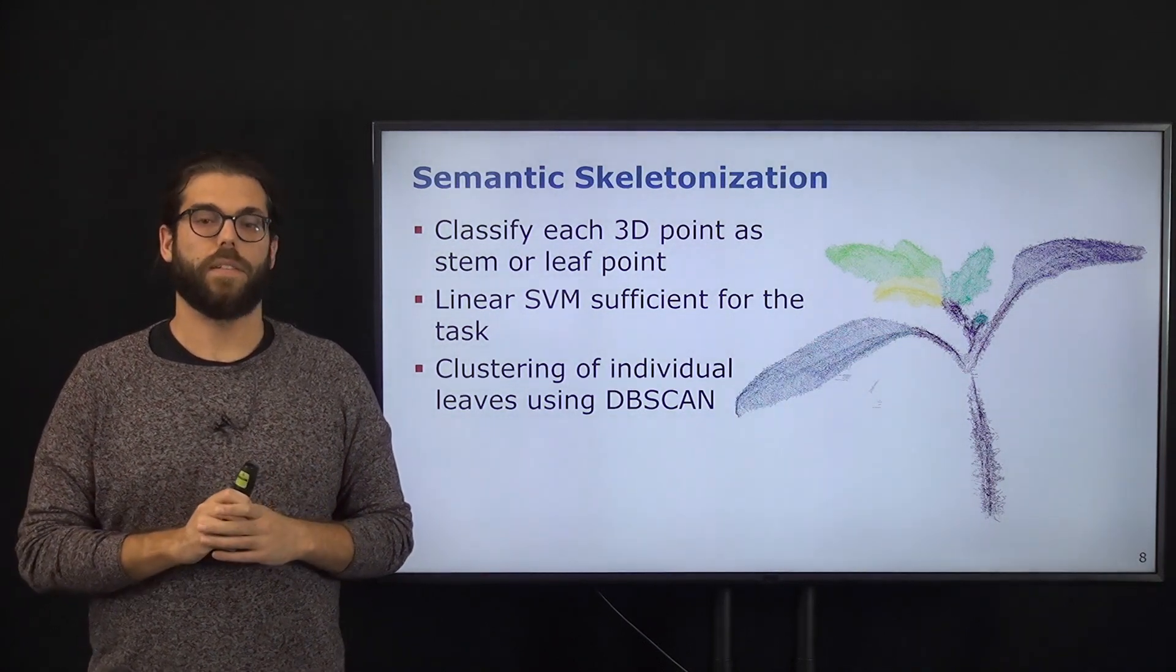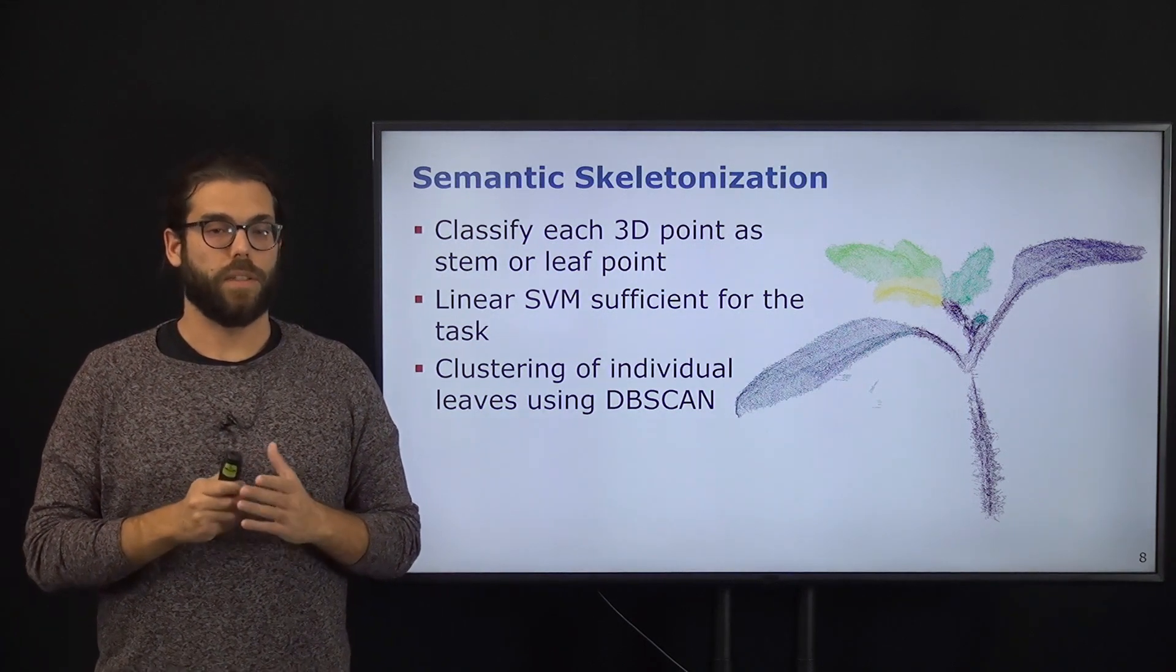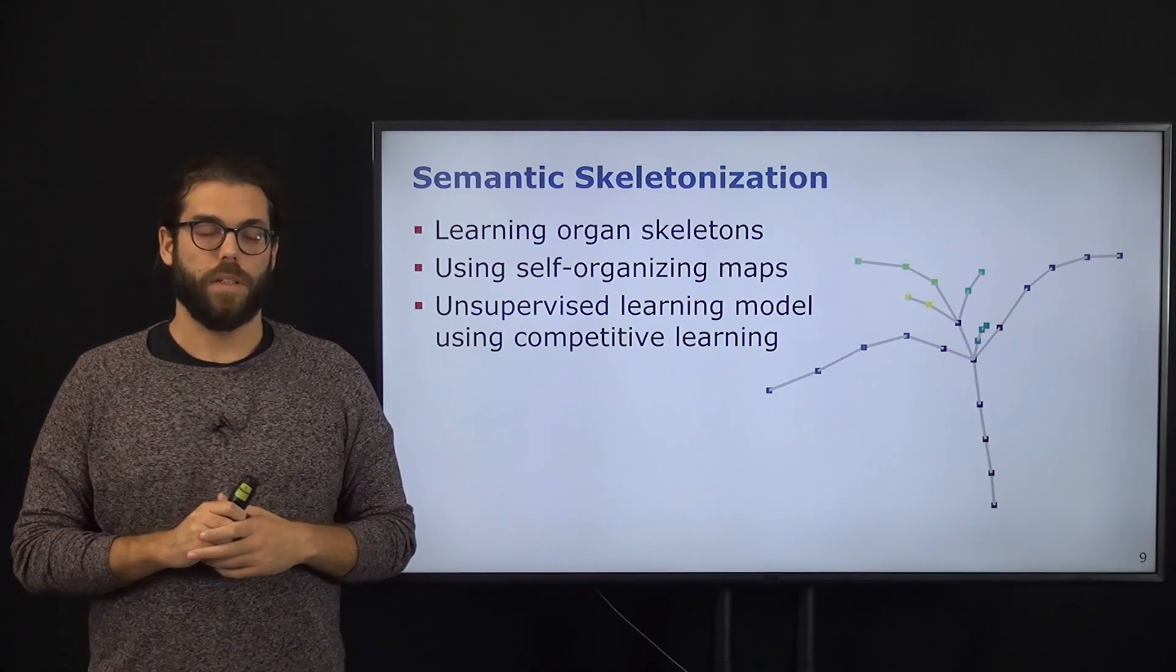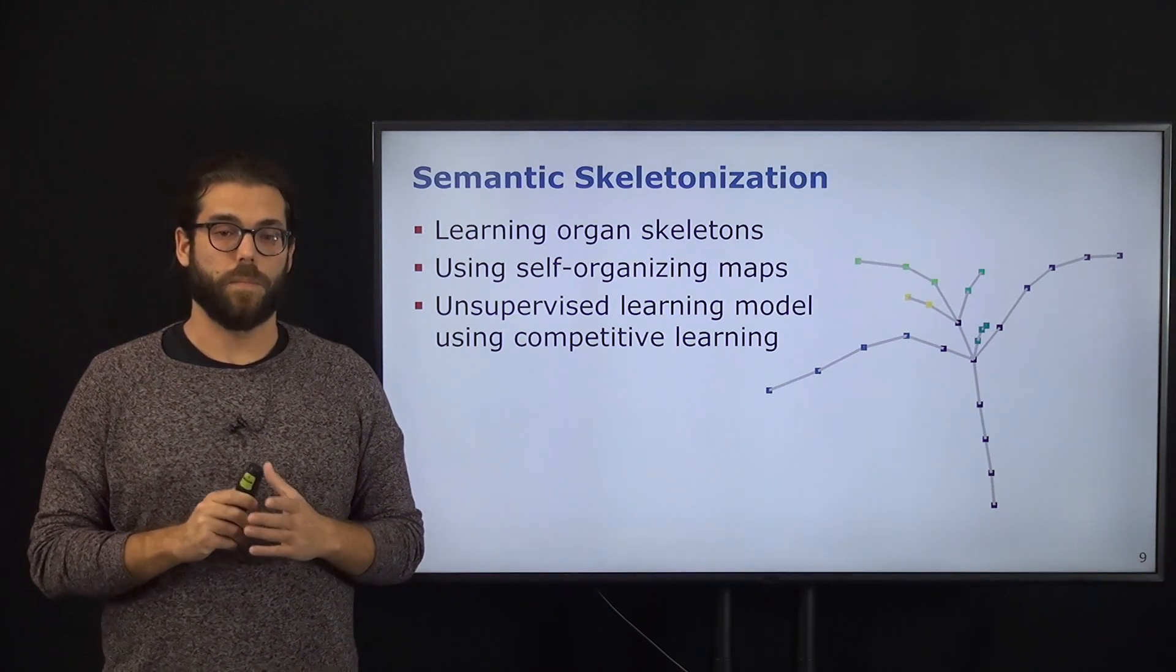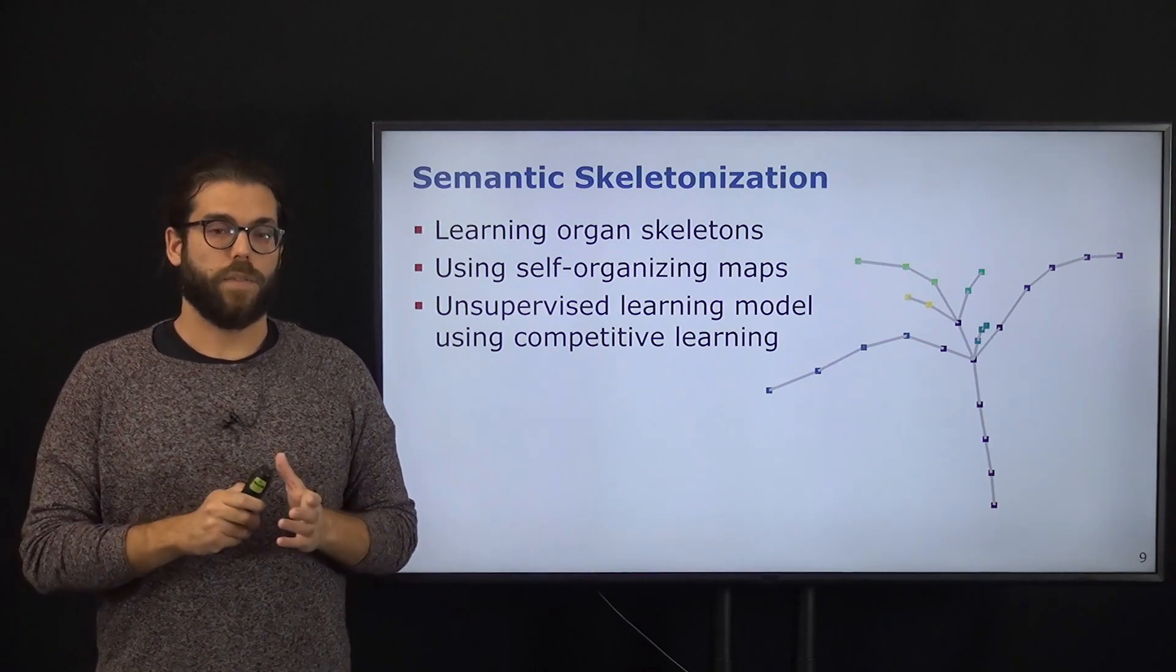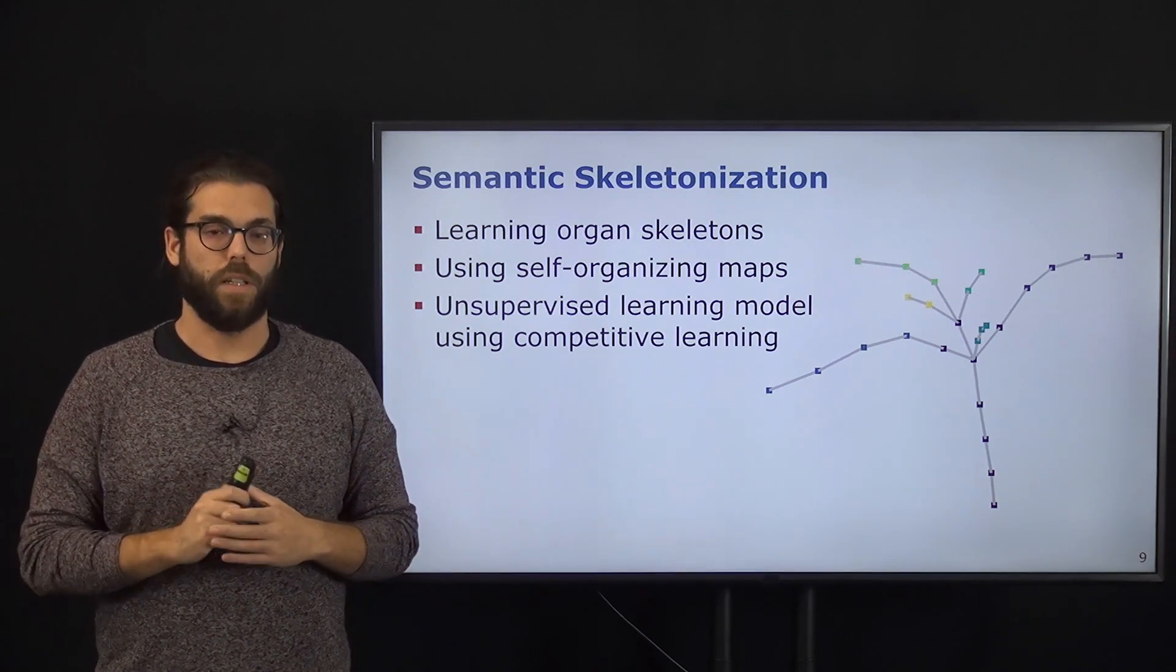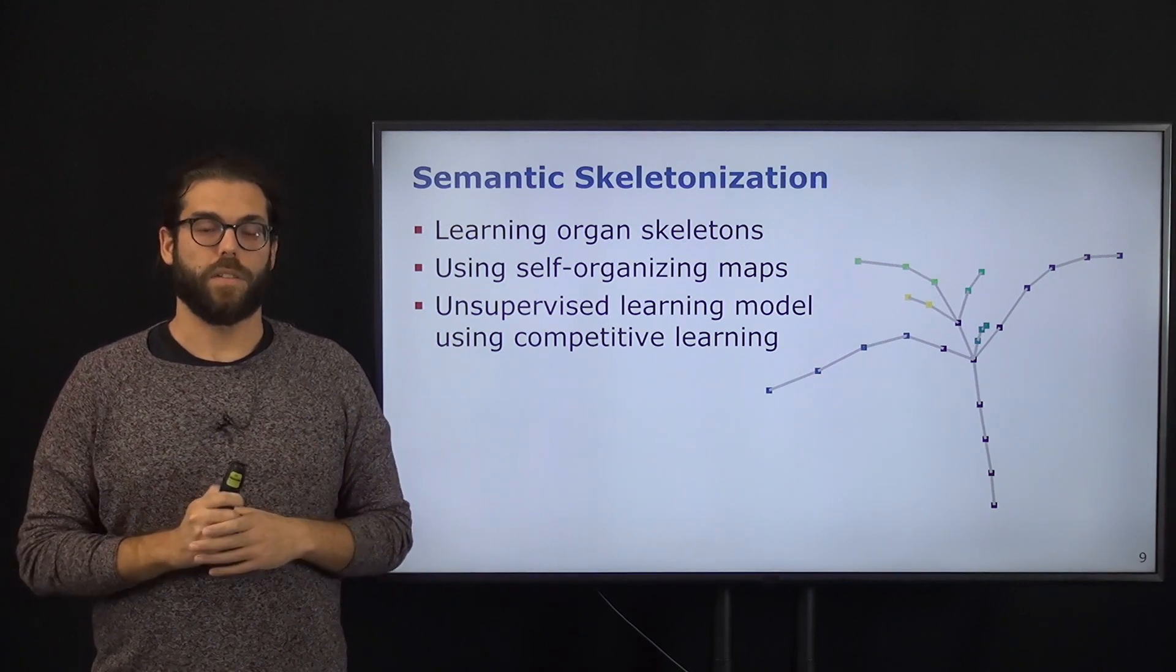we will consider only the points classified as leaf and cluster them into individual leaves using DBSCAN. Once we have each organ individually, we are able to start our skeletonization. Our skeletonization is done through the self-organizing map, which is an unsupervised model introduced in the 80s. The self-organizing maps will give us the nodes and connectivity of our skeleton for each organ individually, and then we put them back together to obtain the skeletonization of the whole plant.